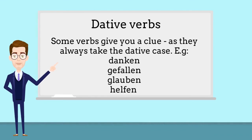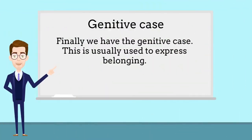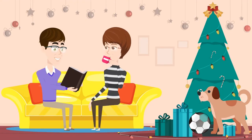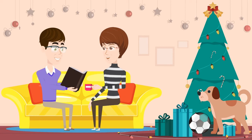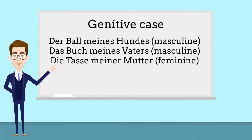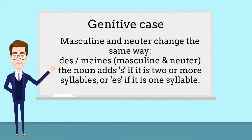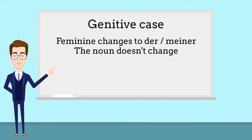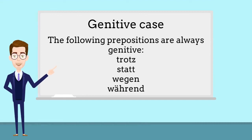Some verbs always take the dative case, for example: danken, gefallen, glauben, helfen. And finally, the genitive case — this is used to express belonging. Der Ball meines Hundes; das Buch meines Vaters; die Tasse meiner Mutter. Masculine and neuter articles change the same way, becoming des and eines, and we also need to add an ending to the noun. For feminine nouns, it changes to der or einer, but the noun doesn't change. Trotz, statt, wegen, während are always genitive.